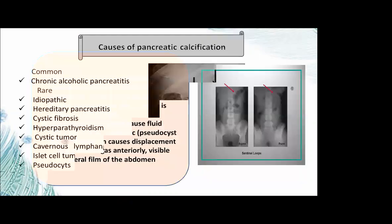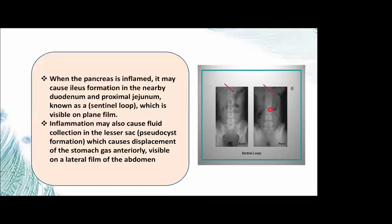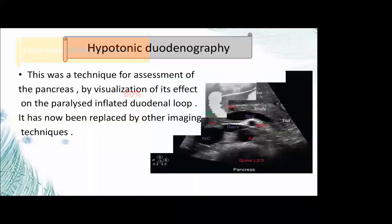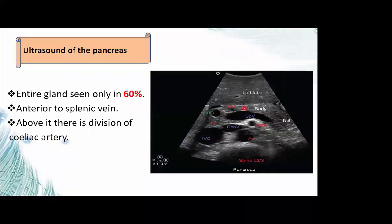Pancreatic masses with calcification, such as islet cell tumour, may cause displacement of the duodenum and proximal jejunum, known as the sentinel loop. Inflammation may also cause fluid collection in the lesser sac, with cyst formation causing displacement of the stomach. Hypotonic duodenography is a technique previously used but now replaced by other imaging techniques for assessment of the pancreas.